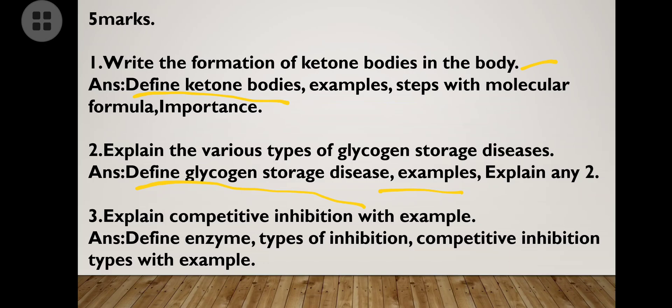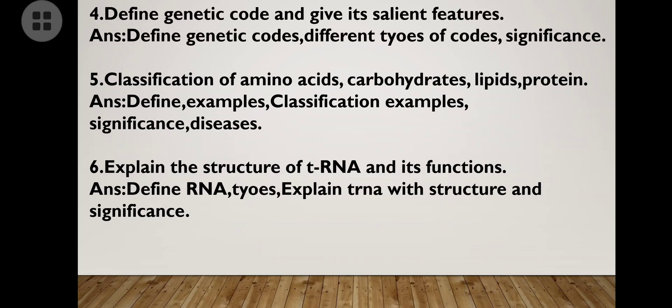Competitive inhibition of enzymes: define types of inhibition, then competitive inhibition specifically. Within competitive inhibition there are two types — reversible and irreversible — with examples mandatory. Then: define genetic code and its salient features. Write the different types of genetic codes and their significance and salient features.